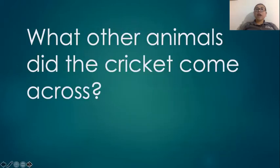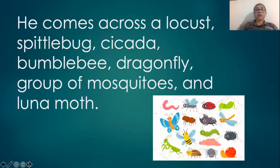What other animals did the cricket come across? He comes across a locust, petal bug, cicada, bumble bee, dragonfly, a group of mosquitoes, and a luna moth.